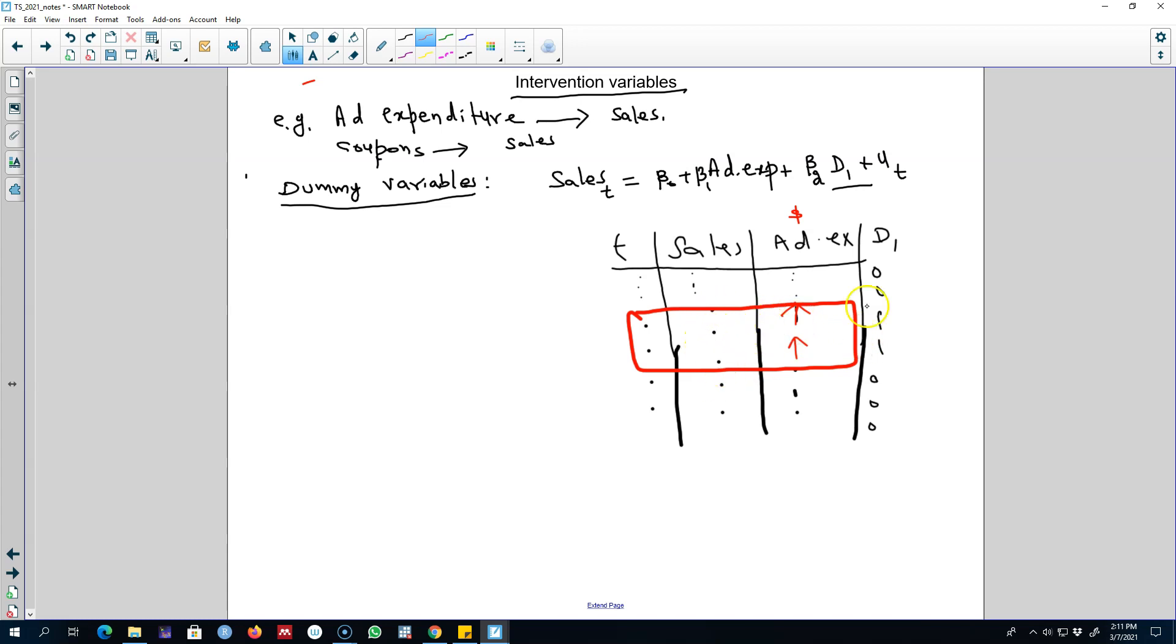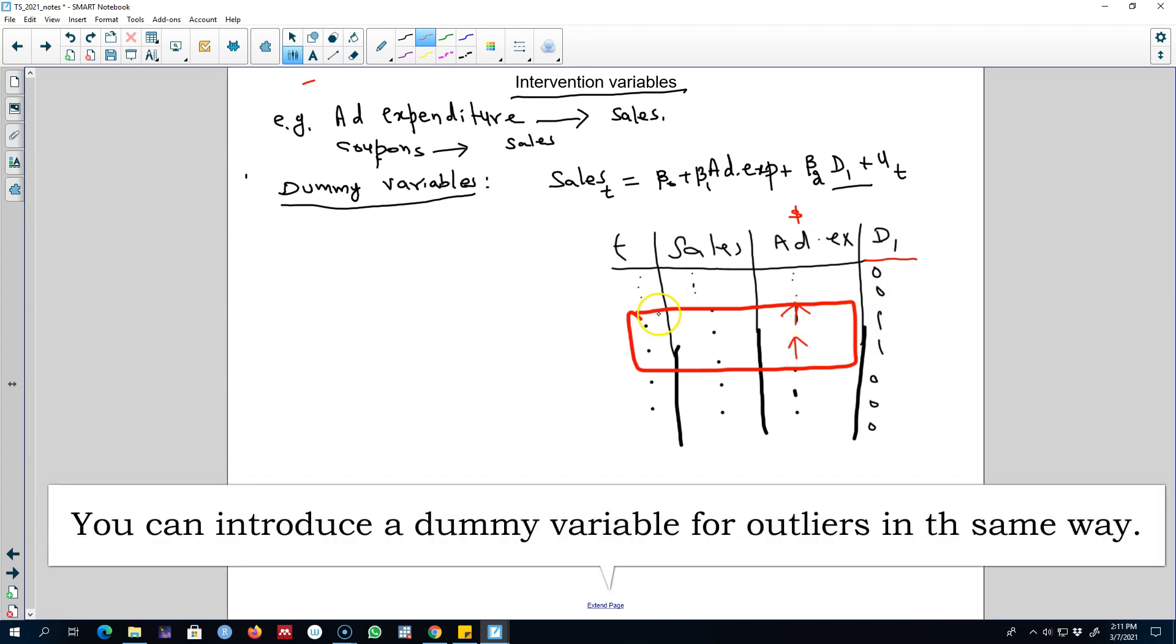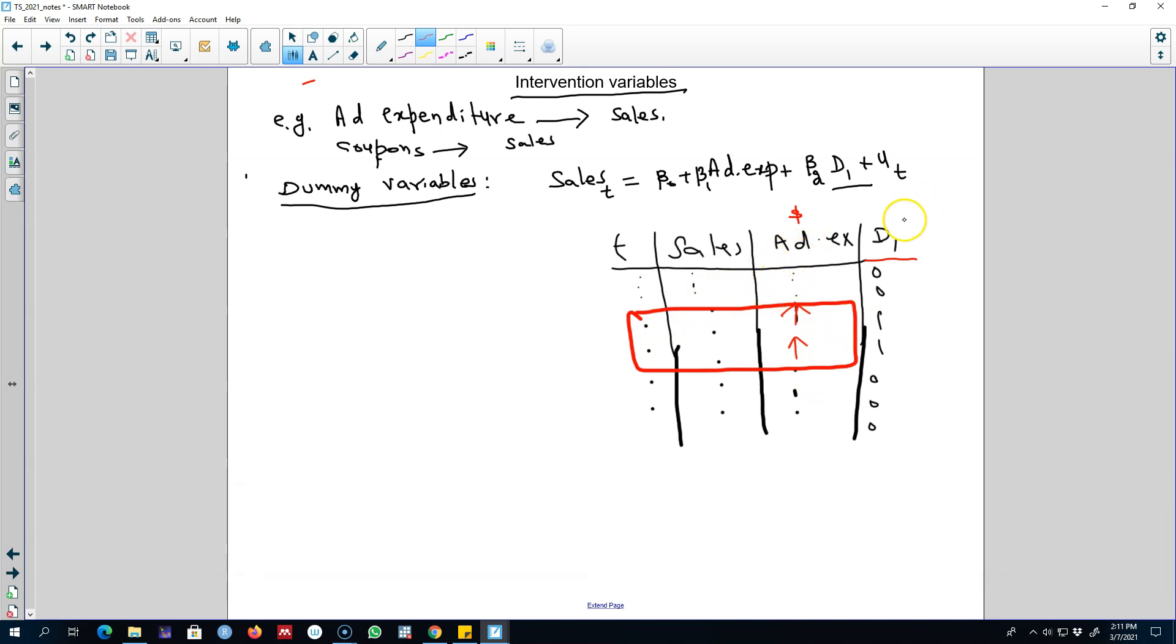What we can do here is create a dummy variable that will take a value of one whenever the time period or sales are occurring in a period with our intervention, that is during the period when we increased our ad expenditures or when we intervene into the market.